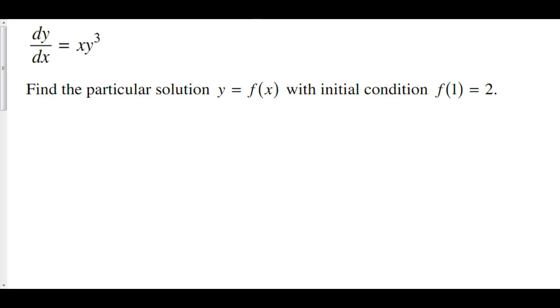Let's first separate our variables. To do this we'll divide both sides by y cubed and we can multiply both sides by dx. So here we have 1 over y cubed dy is equal to x dx.